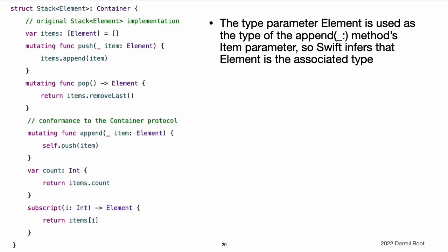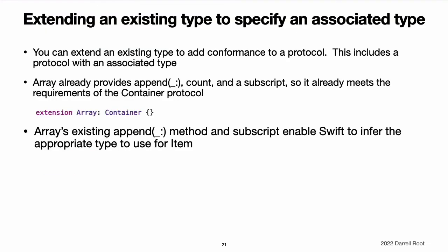You can also make the generic stack type conform to the container protocol. This time, the type parameter element is used as the type of the append method's item parameter, and the return type of the subscript. Swift can therefore infer that element is the appropriate type to use as the item for this particular container.